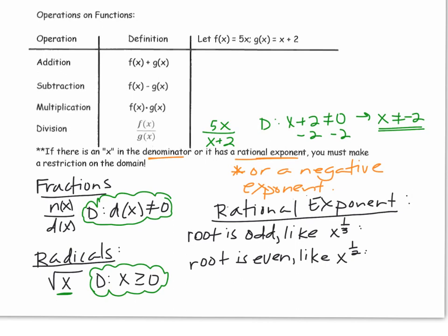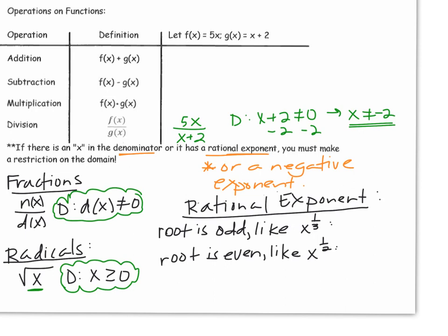Now over here on the right, I wrote rational exponents. So it depends on the type of rational exponent you have, what your rule will be for the domain. For example, if you have an odd root in your rational exponent, the root being the denominator, so that would be like the 3, we can take the root of a positive or negative number, so the domain here would be all real numbers.